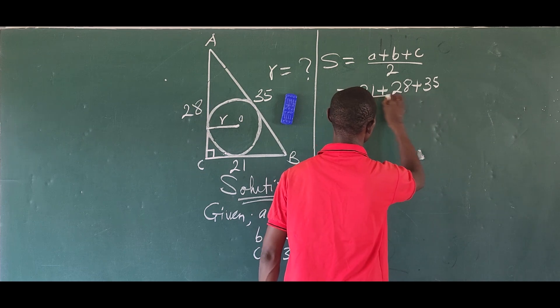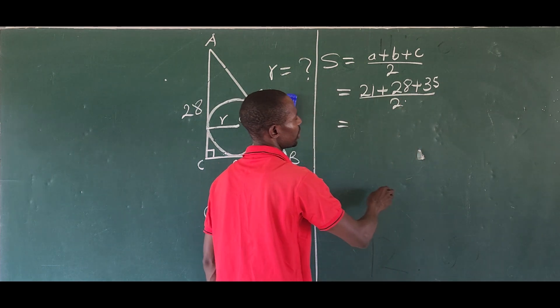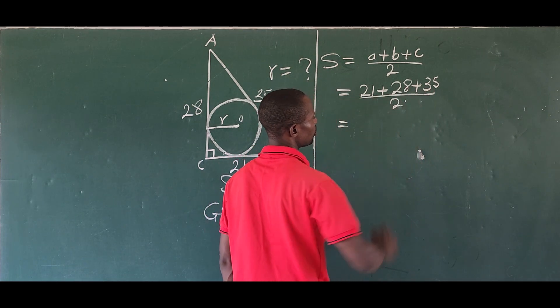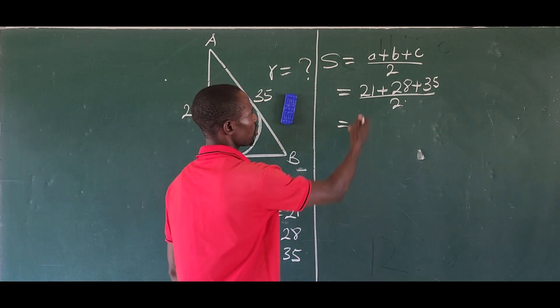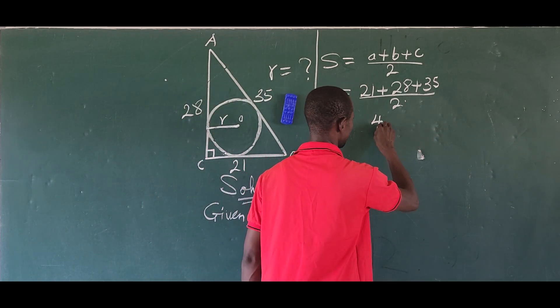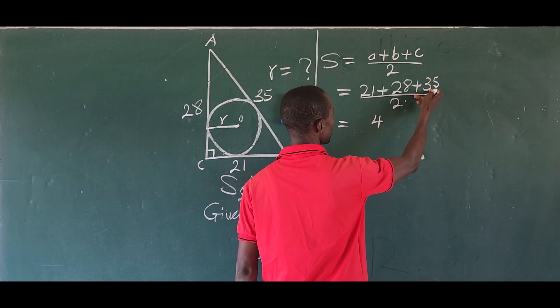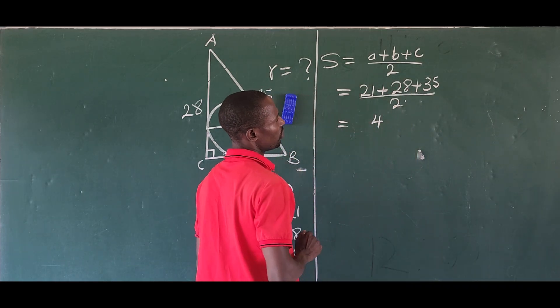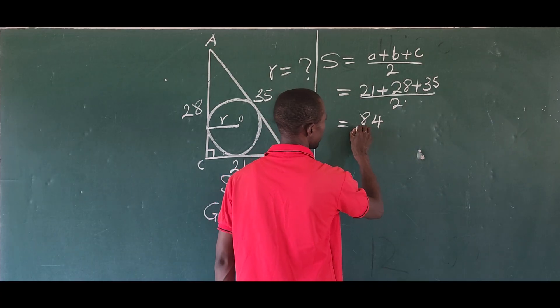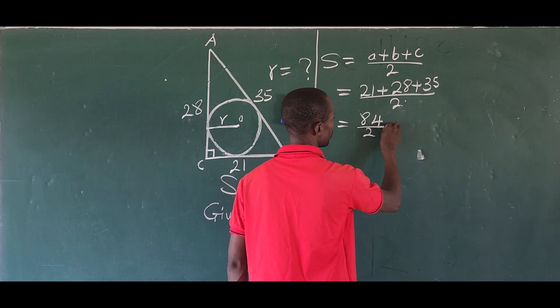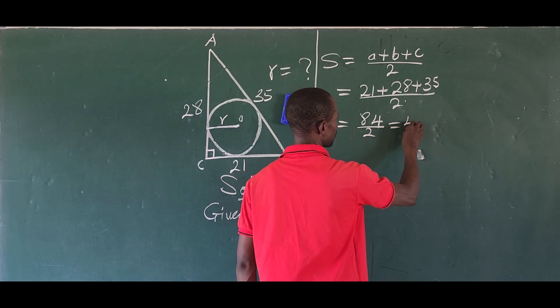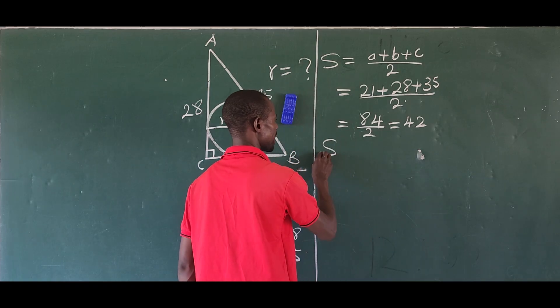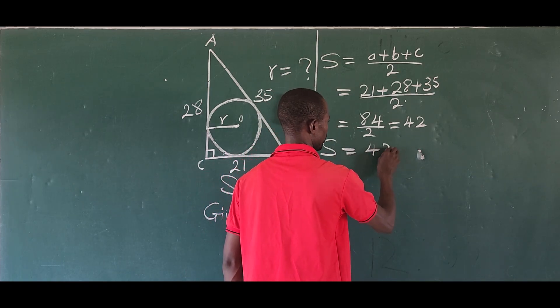Our a is 21, plus b is 28, plus c is 35, all over 2. Let's add up and see what this gives us. 5 + 8 gives us 13, 13 + 1 gives us 14, carry one. 3 + 2 gives us 5, 5 + 2 gives us 7, plus the one we carry gives us 8. Everything over 2. If we divide, this gives us 42. So our s equals 42.